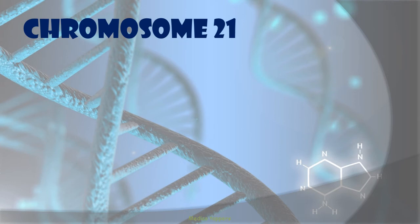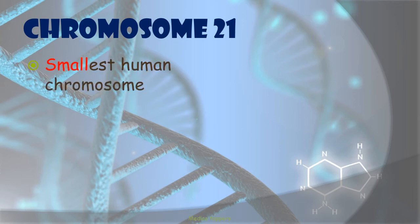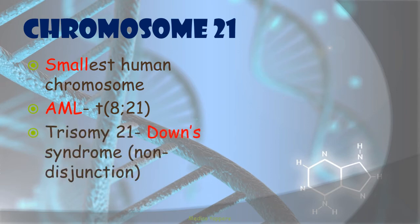Chromosome 21 is one of the smallest human chromosomes. It is associated with AML with translocation number t(8;21). Try to remember this translocation number as it can be asked in MCQs. Trisomy 21 is none other than Down syndrome, which is mainly caused by non-disjunction of chromosomes.